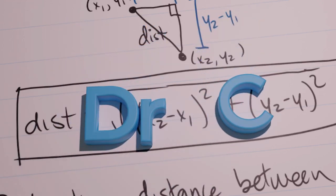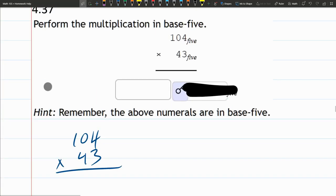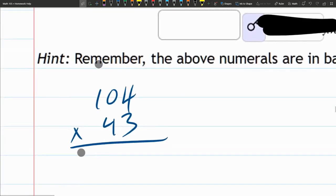In this problem I'm multiplying in base 5, and in base 5 you have to remember there's no digits bigger than 4. So when I get larger products, I need to write them in base 5. Just like normal multiplication, we're going to start with this digit here and multiply it by the three digits up top.